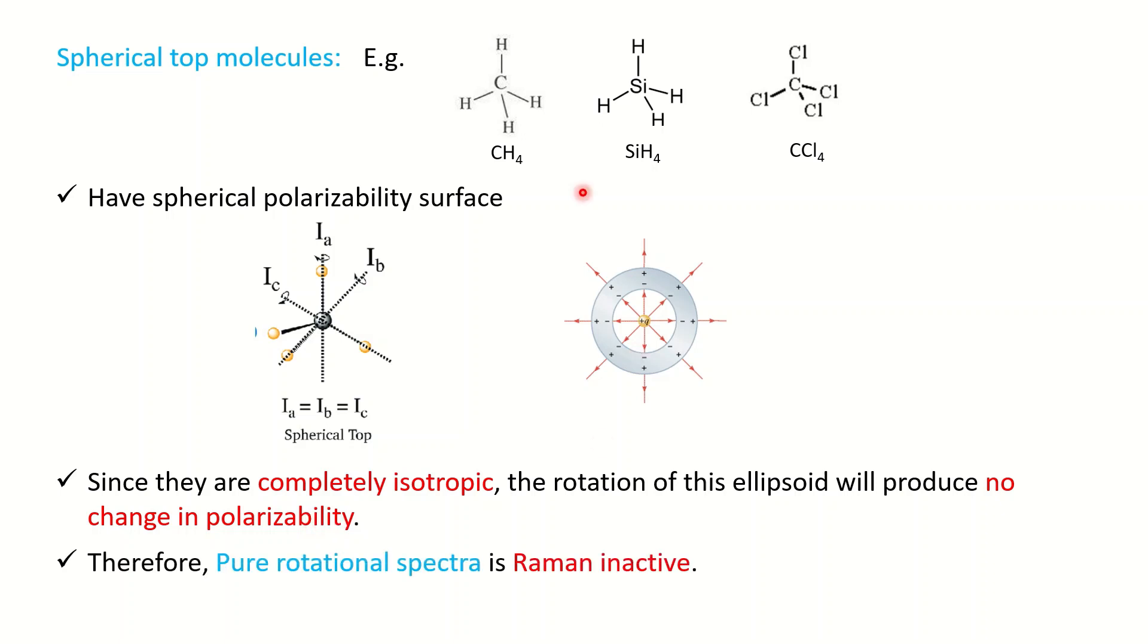When you see the pure rotational spectra for the above molecules, it is Raman inactive. The condition for a molecule to be Raman active is there should be a change in the shape, size, or orientation of the ellipsoid during rotation. Since the electron distribution is equal, there is no change, and so it is Raman inactive.